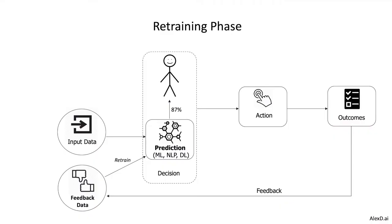In the third phase, we use the feedback plus the input data and maybe rebuild — we retrain the model to improve it. Now the model is being updated using real data from the real world, combined with the feedback, and then we recreate it.